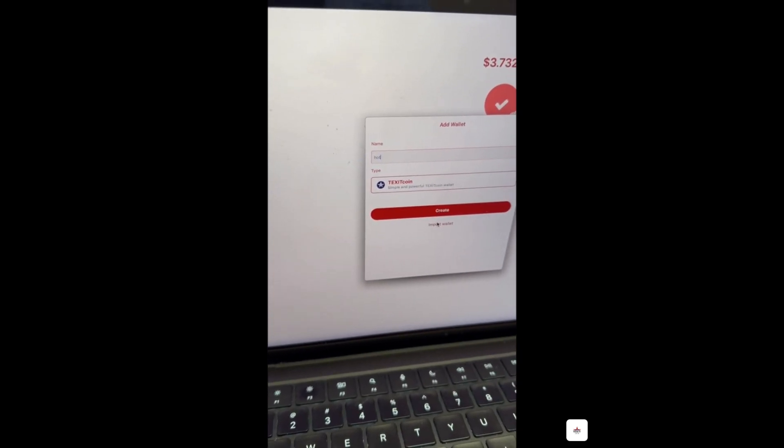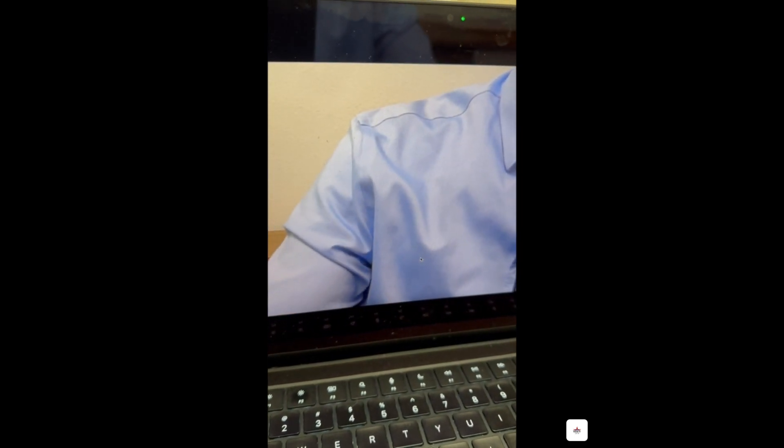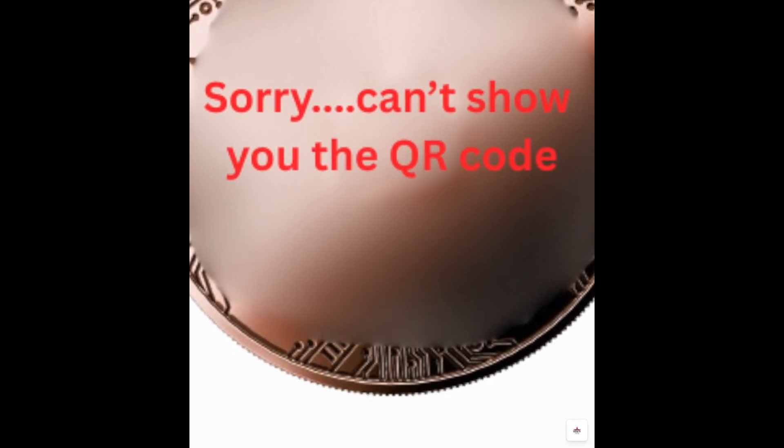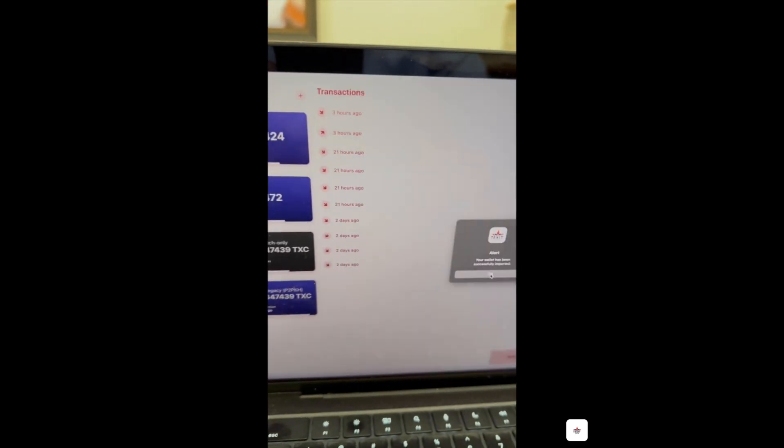Next, you will select scan or import a file. This will activate the camera on the device you are using. You will hold the QR code on your coin in front of the camera. Once the QR code is read, select OK and you will see your wallet is listed and ready to use.